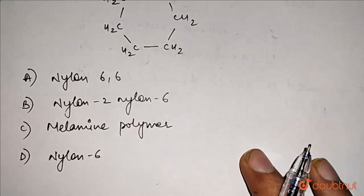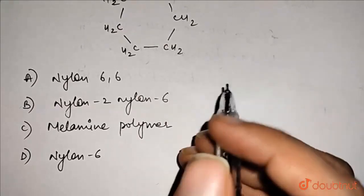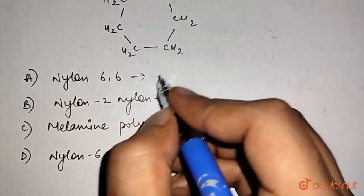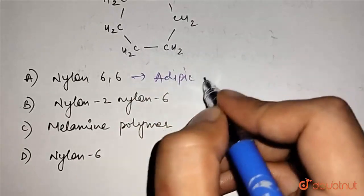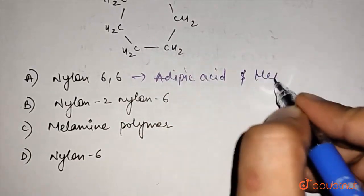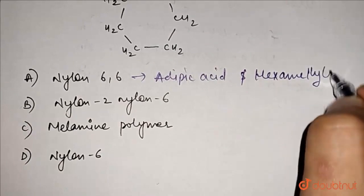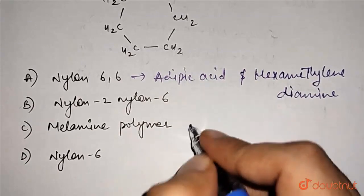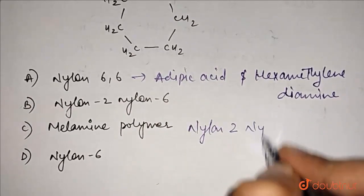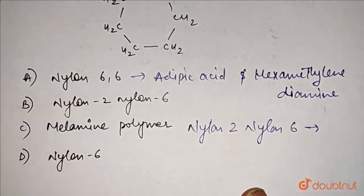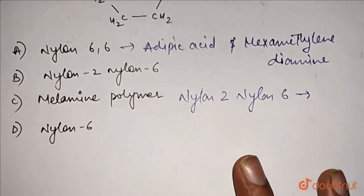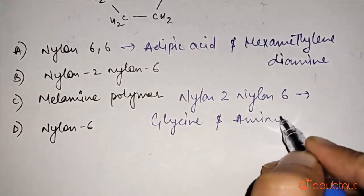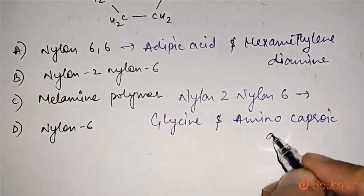So if we have our nylon 66, this is our adipic acid and hexamethylene diamine. If we talk about nylon 2 nylon 6, then we talk about glycine and amino caproic acid.